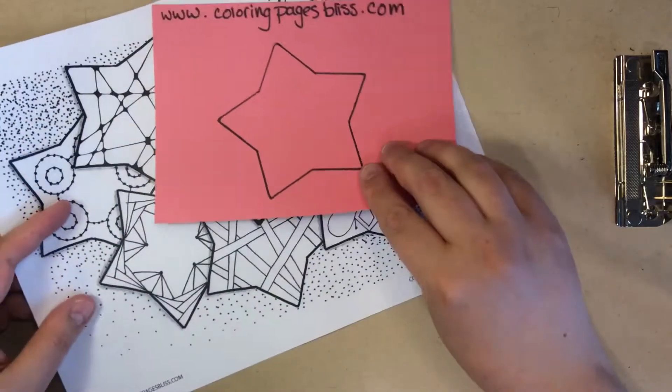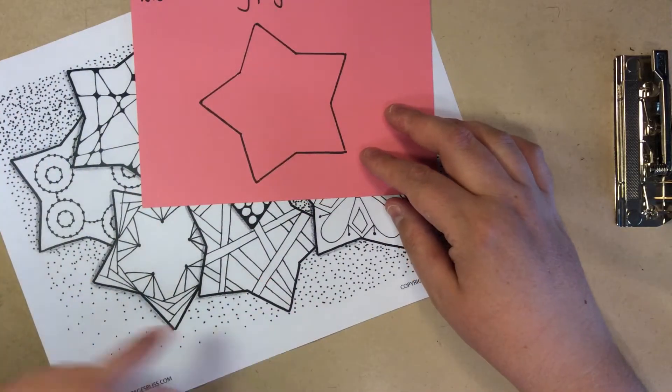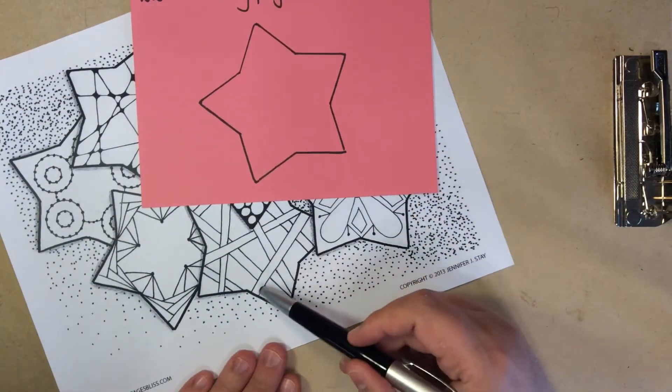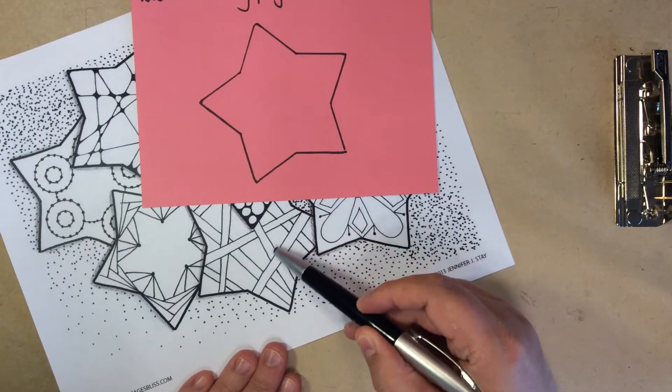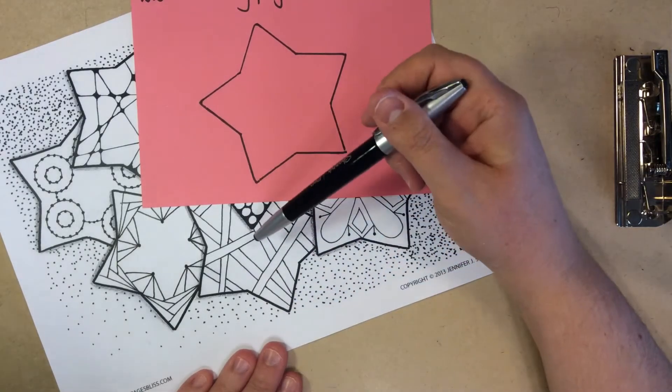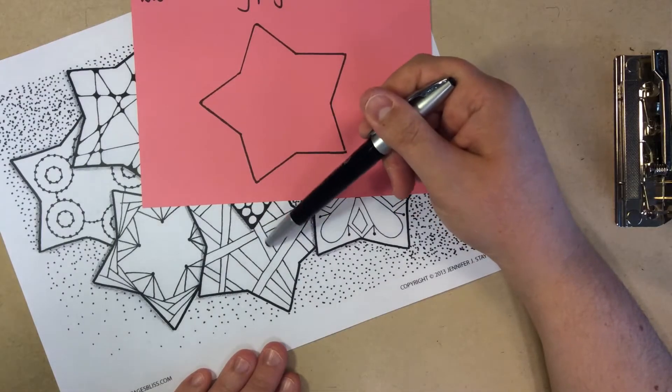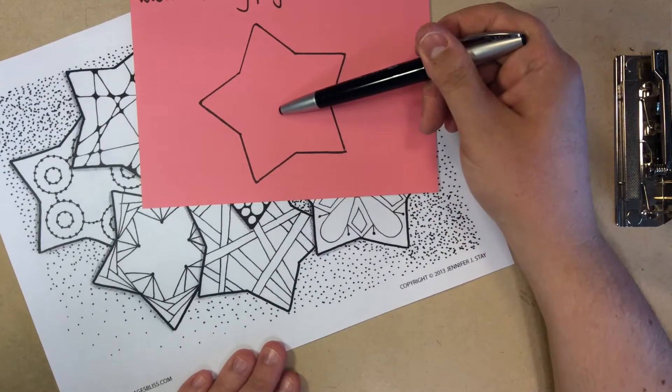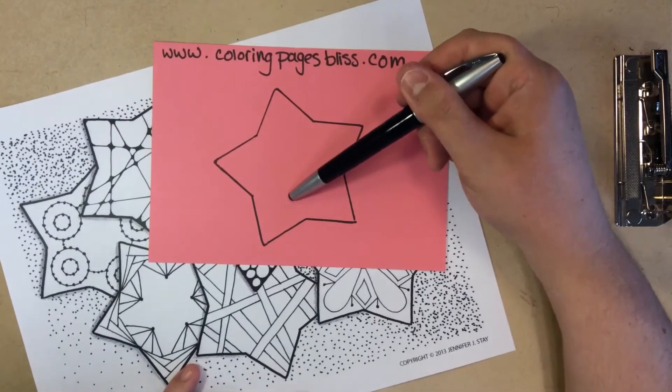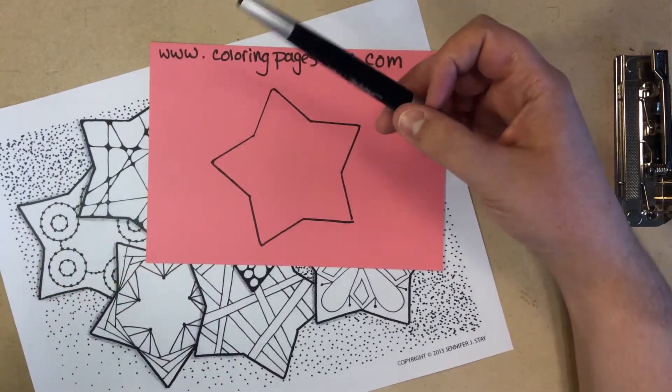Once you have your shape, we're going to start working on the stripes. As you can see, this stripe here appears to be above all the other stripes and that's because we drew it first. And then the next stripe, you just go underneath it by stopping the line and starting again on the other side. Let's transfer that idea onto our star.